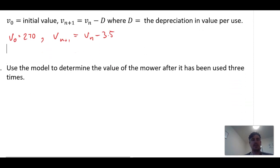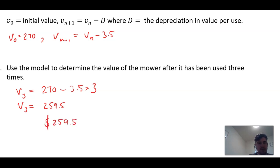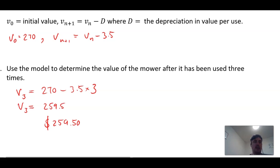We're now going to use this to determine the value after three uses. So for V_3 we're looking for, we're going to have to go three times. So 270 take away 3.5 times 3. That gives 10.5, so you'll end up with 259.5 as the value for V_3. Your final answer is $259.50.